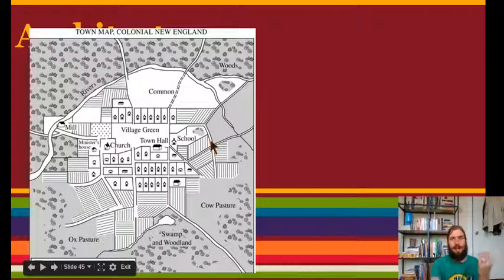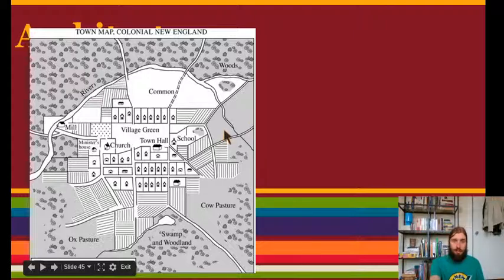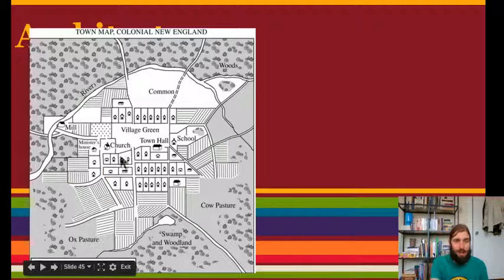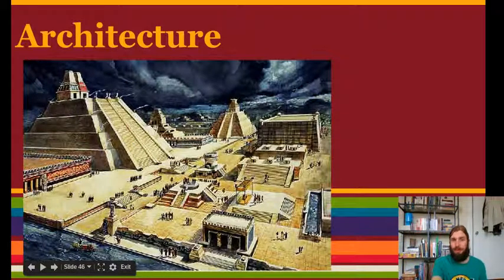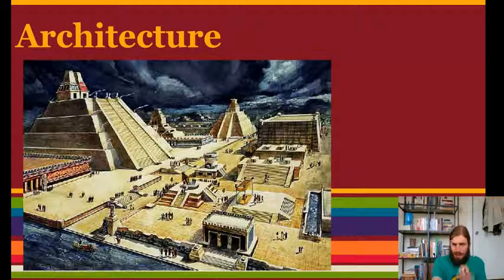We can learn something about what was important to the Aztecs by the fact that these temples were in the middle of town. Just like in New England, where people came from Britain to practice their religion and put churches in the center of their town — that's something they had in common with the Aztecs. They also put their temples and religious buildings in the middle of their towns, showing that religion was one of the most important things to them.